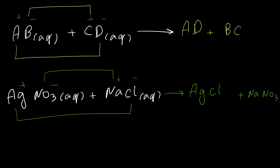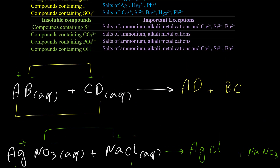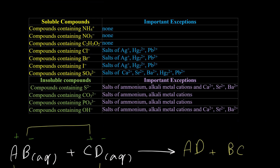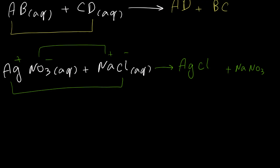Let's see which one is solid — that white solid — and which one is soluble in water. Looking at the solubility chart, we can see that for the chloride ion all compounds are soluble except with silver, mercury, and lead. So AgCl is going to be insoluble and it forms a solid during this reaction, but sodium nitrate is soluble according to the solubility chart. So this is the equation and it's already balanced. We call this the molecular equation.